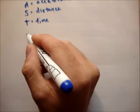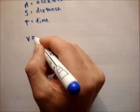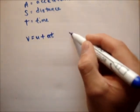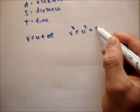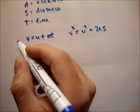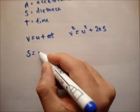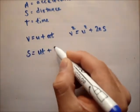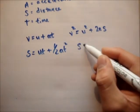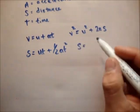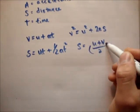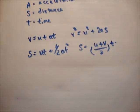Here you have v is equal to u plus at. You have v squared is equal to u squared plus 2as. You have s is equal to ut plus half at squared, and finally you have s is equal to u plus v over 2 times t.